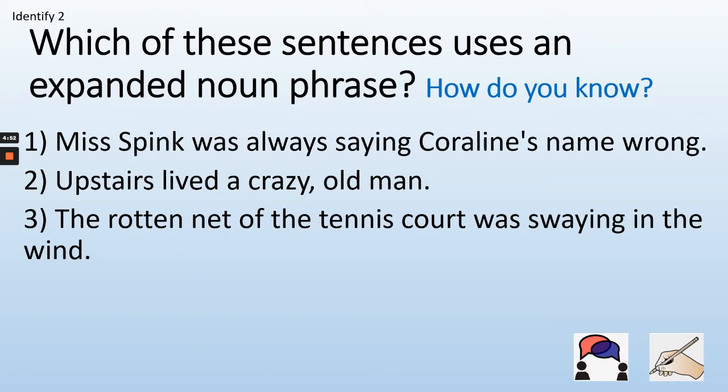Which of these sentences uses an expanded noun phrase, and how do you know? Write one, two or three, tick and cross. One: Miss Spink was always saying Coraline's name wrong. Two: Upstairs lived a crazy old man. Three: The rotten net of the tennis court was swaying in the wind. Pause the video now and write your answers. The first sentence does not have an expanded noun phrase. In number two, a crazy old man — a is the determiner, crazy old are the adjectives, man is the noun. Number three: the rotten net — the is the determiner, rotten is the adjective, net is the noun.